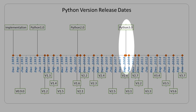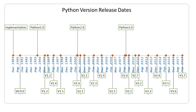It is important to know the difference between Python 2 and Python 3. Please focus on this point. Python 2 is not the same as Python 3, and Python 3 is not fully backward compatible with Python 2. If you write code in Python 2, it may not work on Python 3.